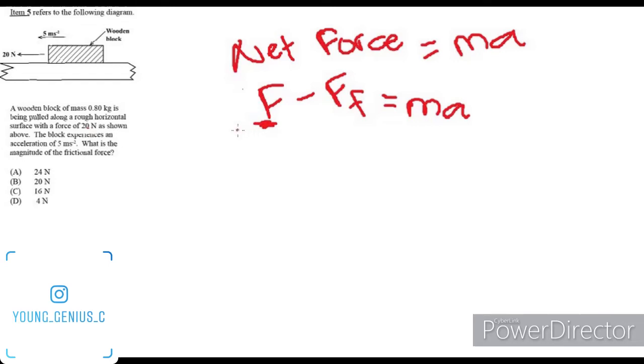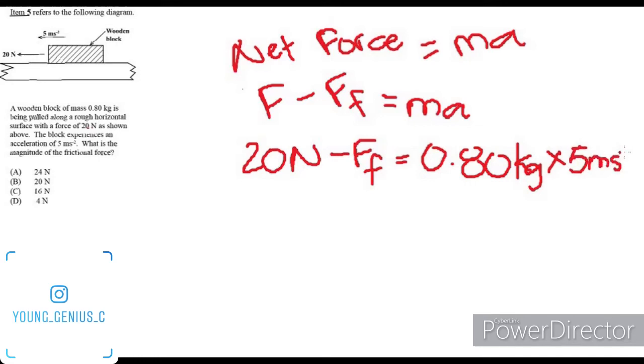The driving force we were given was 20 newtons, so 20 newtons minus the frictional force is equal to the mass which we were given, which is 0.80 kilograms, multiplied by the acceleration which we got was 5 meters per second squared.